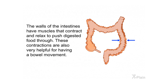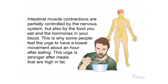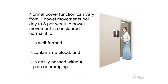The walls of the intestines have muscles that contract and relax to push digested food through. These contractions are also very helpful for having a bowel movement. Intestinal muscle contractions are partially controlled by the nervous system, but also by the food you eat and the hormones in your blood. This is why some people feel the urge to have a bowel movement about an hour after eating, and this urge is stronger after meals that are high in fat. Normal bowel function can vary from three bowel movements per day to three per week.